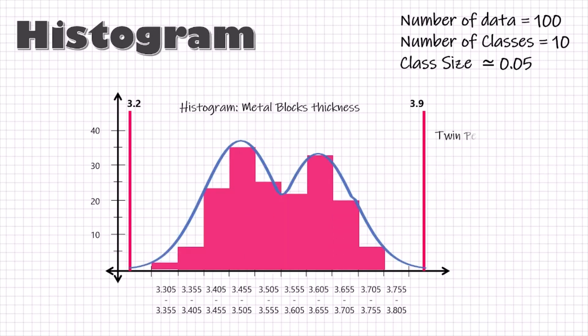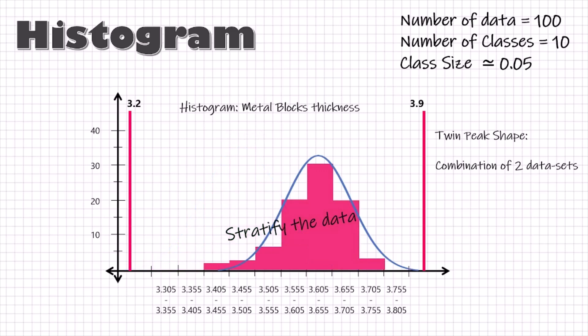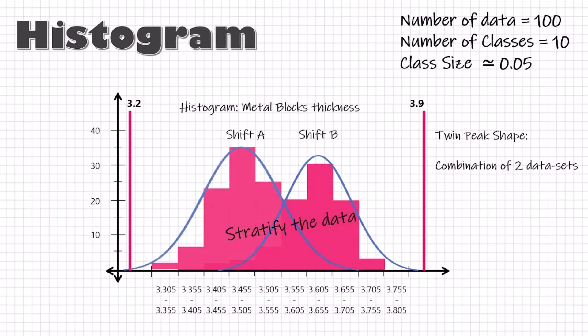If the shape is twin peak, that could mean that there are basically two data sets and we need to stratify the data according to different factors. For example, if I plot two different histograms for this twin peak, histogram A for the parts produced in A shift and histogram B for the parts produced in B shift, I may get something like this. And the combination is a twin peak. So, we immediately know that something has changed between shift A and B and continue our investigation in that direction.